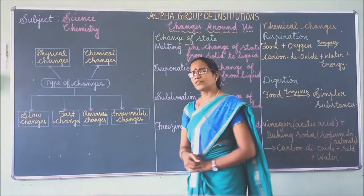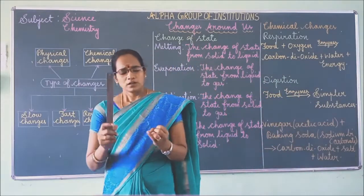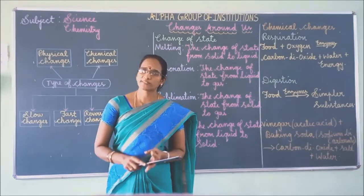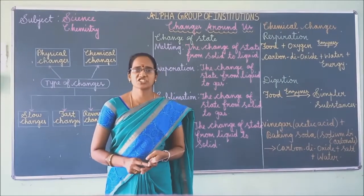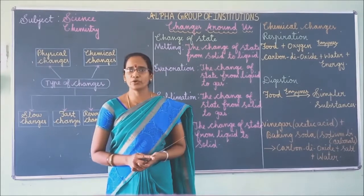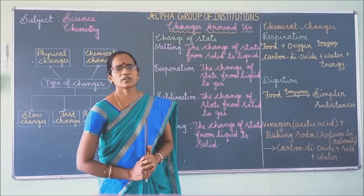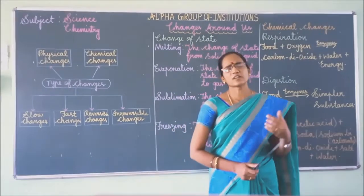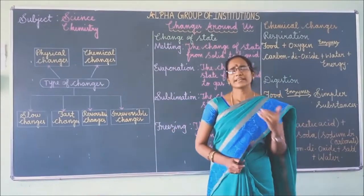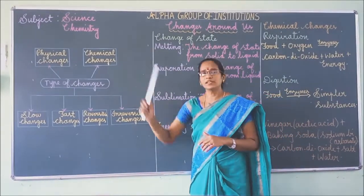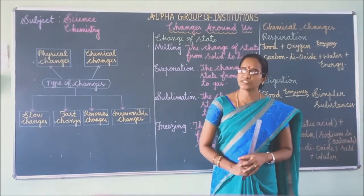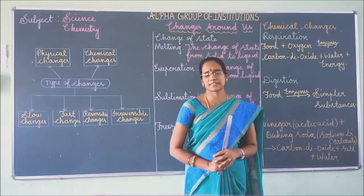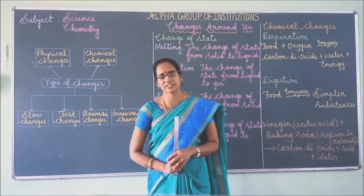Examples of chemical changes: cooking of food, ripening of fruits, photosynthesis, respiration, digestion of food, and burning of a candle. A chemical change is the change in which a new substance is formed during a chemical reaction.